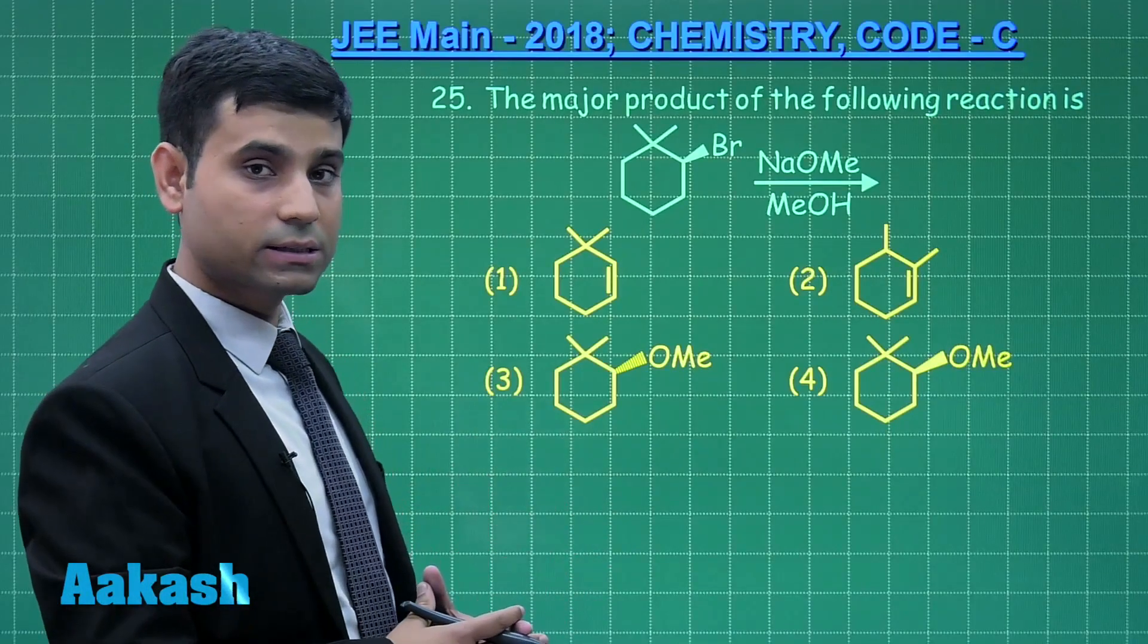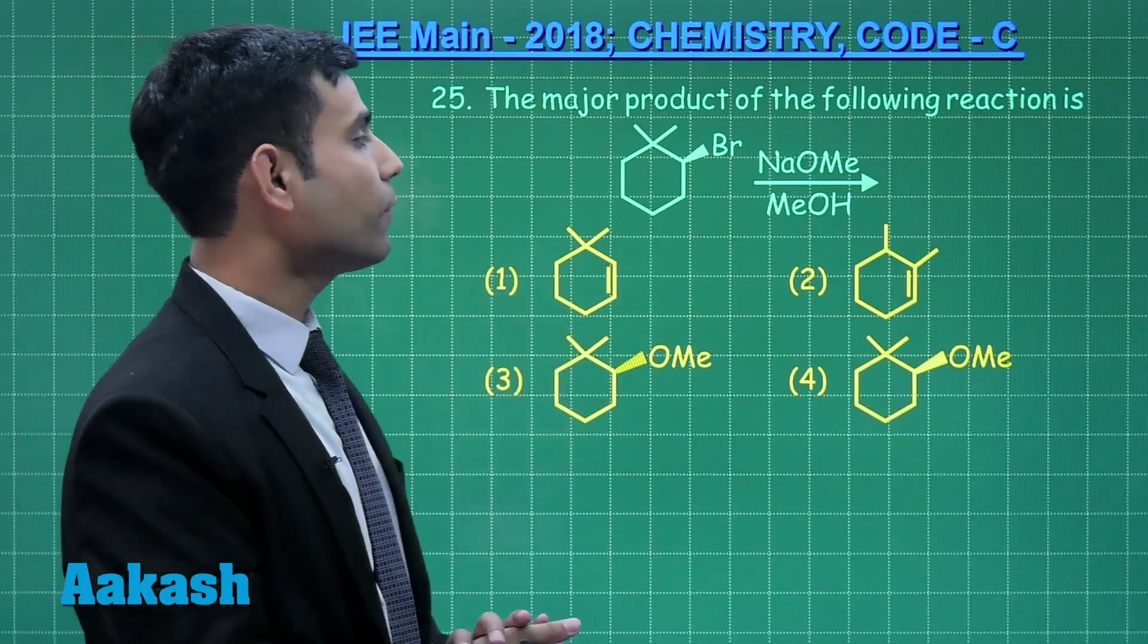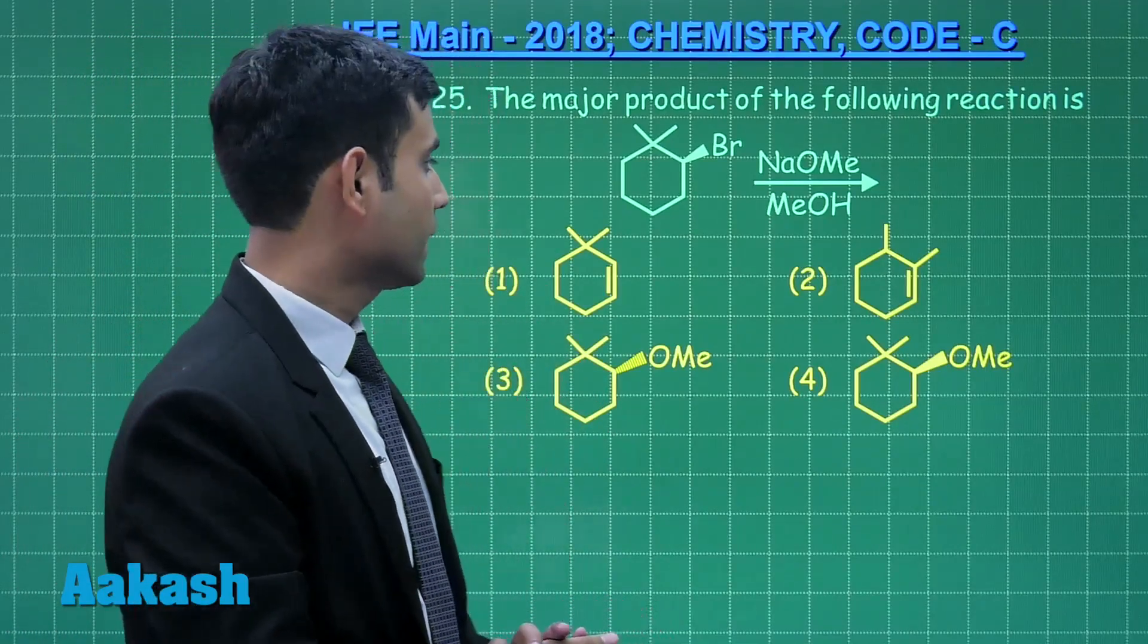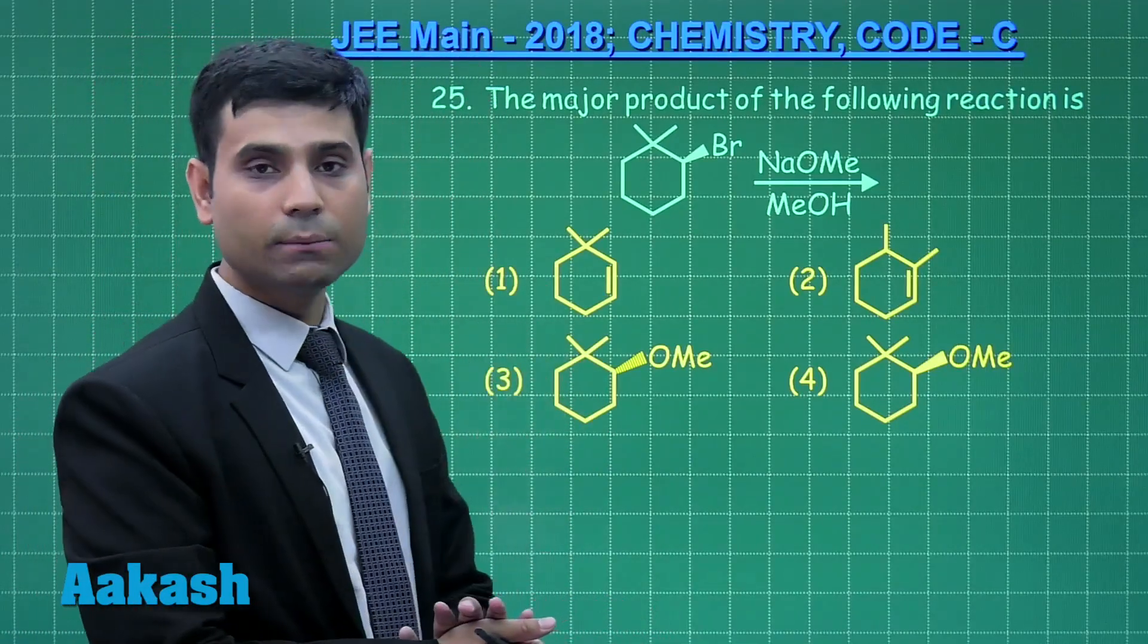Question number 25 says the major product of the following reaction is, here we have sodium methoxide in methanol.